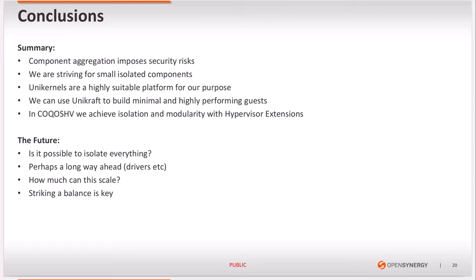In conclusion, we saw how component aggregation imposes security risks and highlighted the requirement for compartmentalization and isolation, and we saw that Unikernels are a suitable platform for that purpose. We introduced Unikraft and saw how it helps produce small, specialized guests of high performance and low resource usage. We also had a closer look at how the Cocos Hypervisor achieves isolation with hypervisor extensions and synchronous exception forwarding.